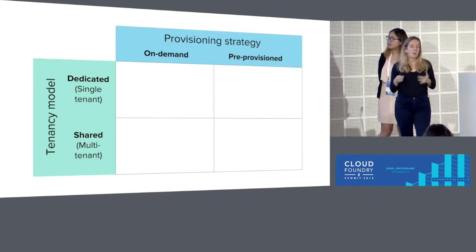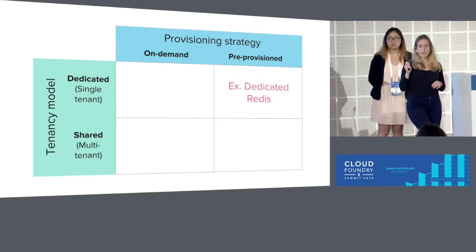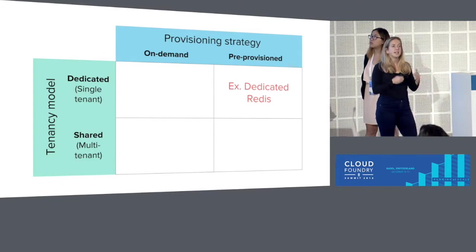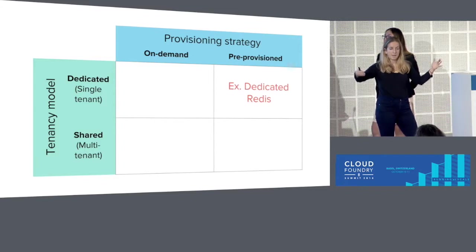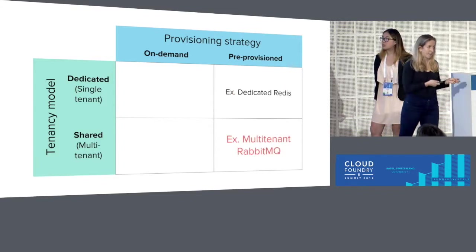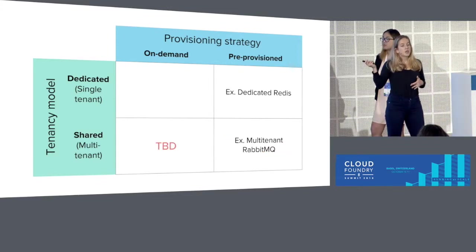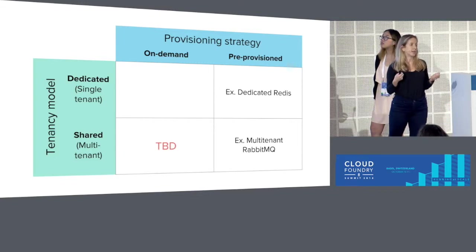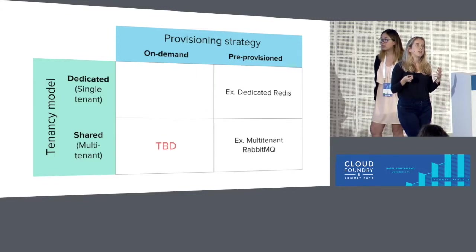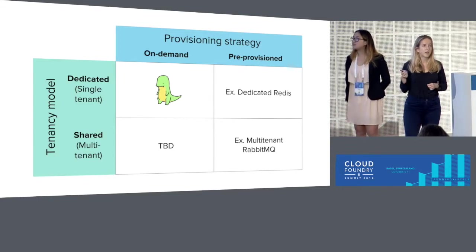With regard to tenancy, we have dedicated where you have a single VM for an instance, or multi-tenancy where you have many users or many instances on a large VM. For example, with dedicated Redis, you have pre-provisioned dedicated instances — the operator sets up a bunch of Redises of the same size and makes those available. With multi-tenant RabbitMQ, you have a large VM, and when a new user creates a new rabbit, a new user account is carved out for them. We don't have current examples of on-demand with strict multi-tenancy — this is something RabbitMQ is exploring for Cloud Foundry for use cases like development or testing.